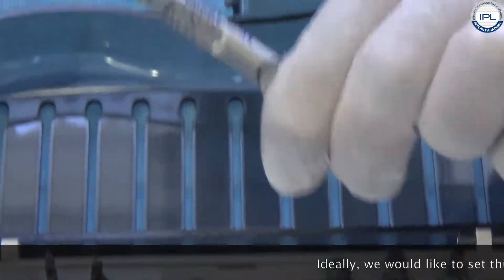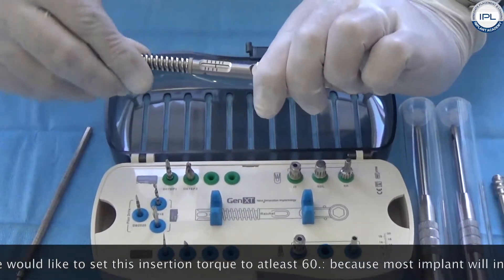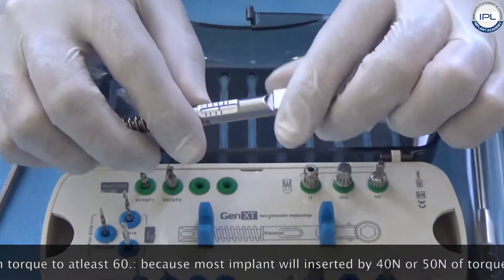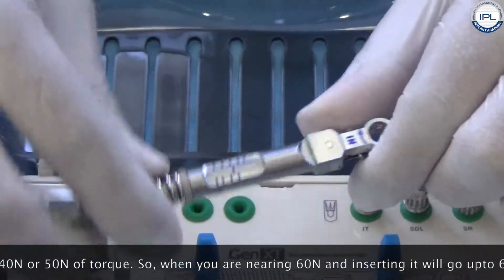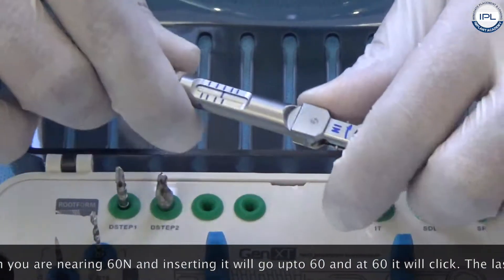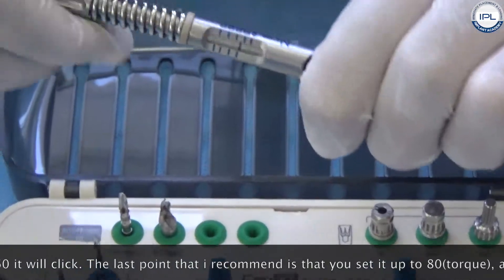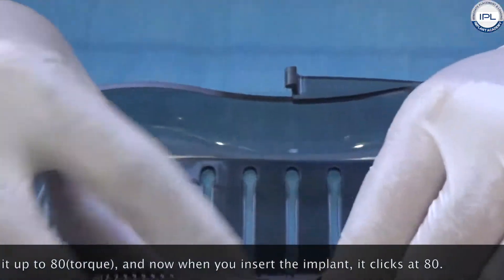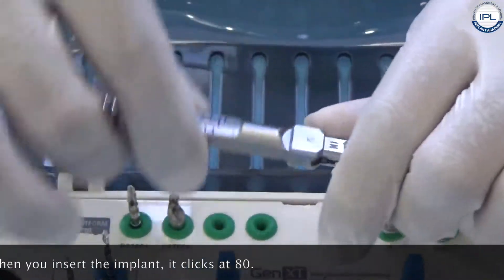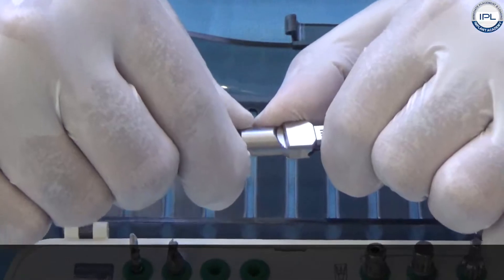Ideally we would like to set this insertion torque at at least 60, because most implants will be inserted by 40 or 50 newtons of torque. So when you are nearing 60 newtons, when you are inserting it will go up to 60 and then at 60 it will click. And finally the last point that I recommend is that you insert it up to 80. You take the torque up to 80, and now when you are inserting the implant and it clicks at 80, you see it's a lot more difficult now.